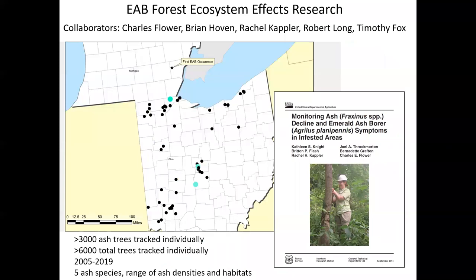I've been working on monitoring the effects of emerald ash borer on forest ecosystems since 2005 in Ohio. We have about 150 plots spread across Ohio. They used to have about 3,000 large ash trees that were tracked individually over time, representing all five of those ash species, and a range of different ash densities and habitats. My monitoring methods are published in a TCR that you can access online. We're going to zoom in on three sites that are in blue there, but first we're going to look at the landscape scale.